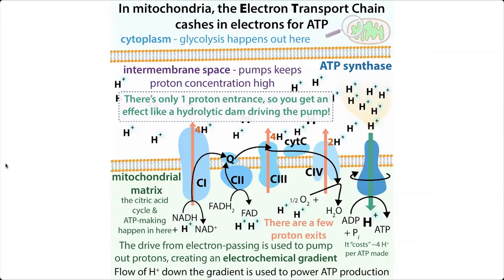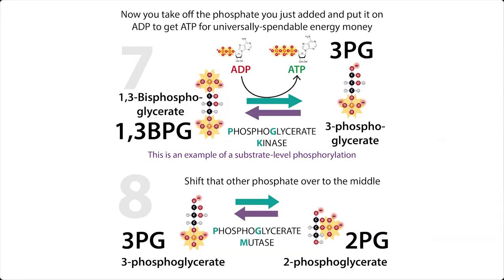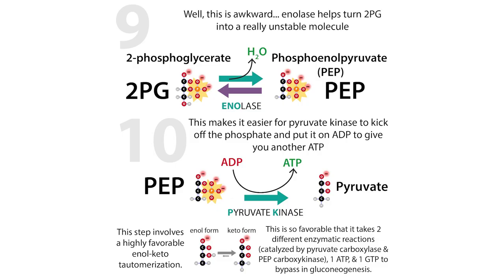Remember that NADH can later be used to generate ATP through the electron transport chain and oxidative phosphorylation. This step here is substrate-level phosphorylation happening directly, as opposed to using energy from oxidation reactions of the electron transport chain to power phosphorylation. You end up with 1,3-bisphosphoglycerate, which has one of those high-energy bonds. It's not the breaking of the bond that's energetically favorable, but what you get in return — a lot of energy you can use to power ATP production.